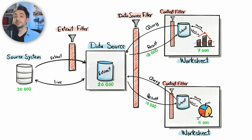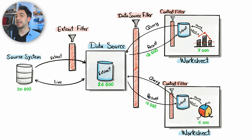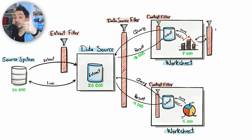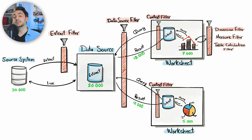Looking at the big picture, the first category of filters — extract filter, data source filter, and context filter — share the same goal: to reduce the size of the data and optimize performance of the visualizations. These filters are usually created by Tableau developers and are not offered to end users in the visualizations. The second category — dimension filter, measure filter, and table calculation filter — are offered to users, giving them the power to slice and dice data and focus on specific subsets for better analysis.